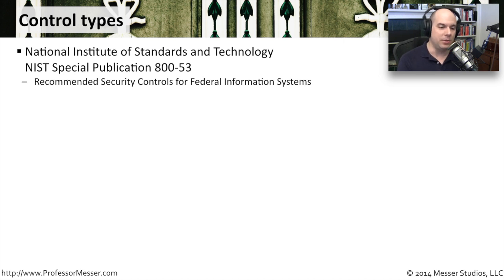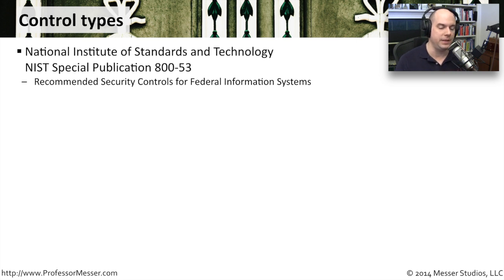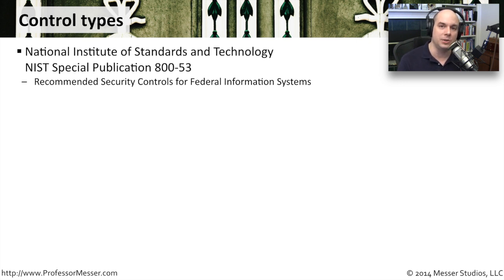Although the name says Federal Information Systems, there's some nice information in here that you could almost apply to anybody's organization. If you go out to Google and search for NIST Special Publication 800-53, you will see this document. It is quite comprehensive and a very nice guide to how you can start taking different parts of your organization, categorizing the different kinds of risks you have, and setting standards on how you can deal with those risks.